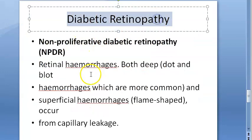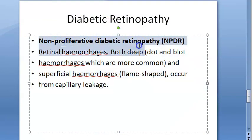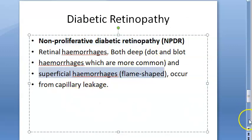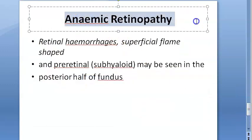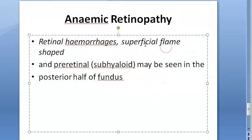In diabetic retinopathy, flame-shaped hemorrhages can appear in the non-proliferative stage before it becomes proliferative. These are superficial hemorrhages occurring because of capillary leak. In diabetic retinopathy, you can actually see both superficial flame-shaped hemorrhages and deep dot-and-blot hemorrhages.